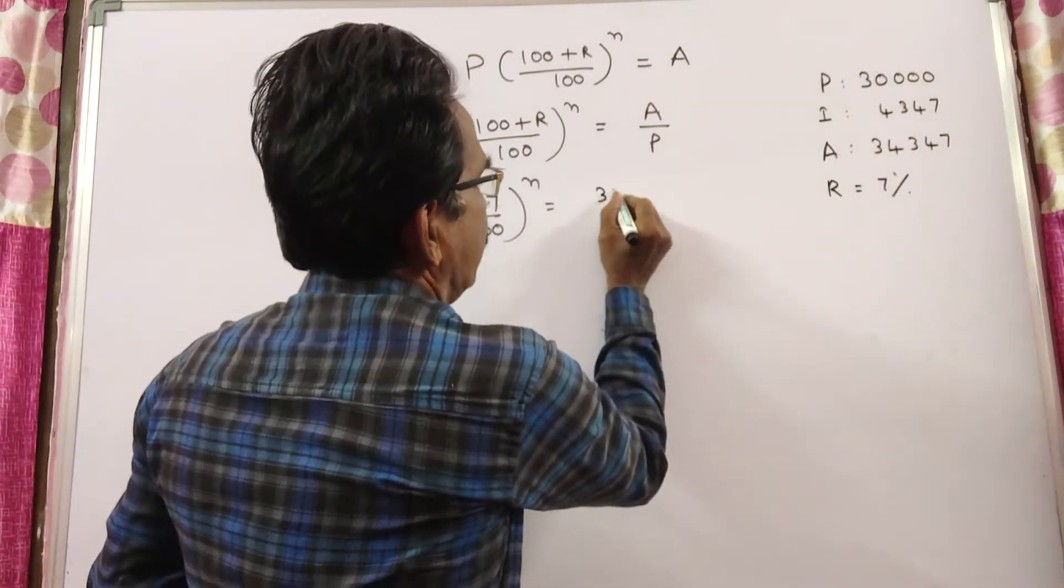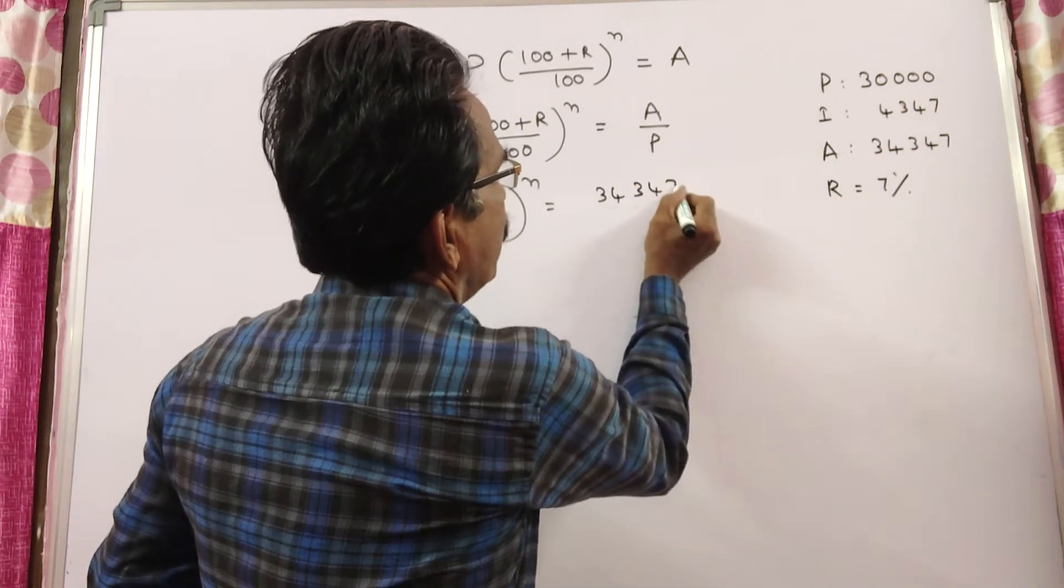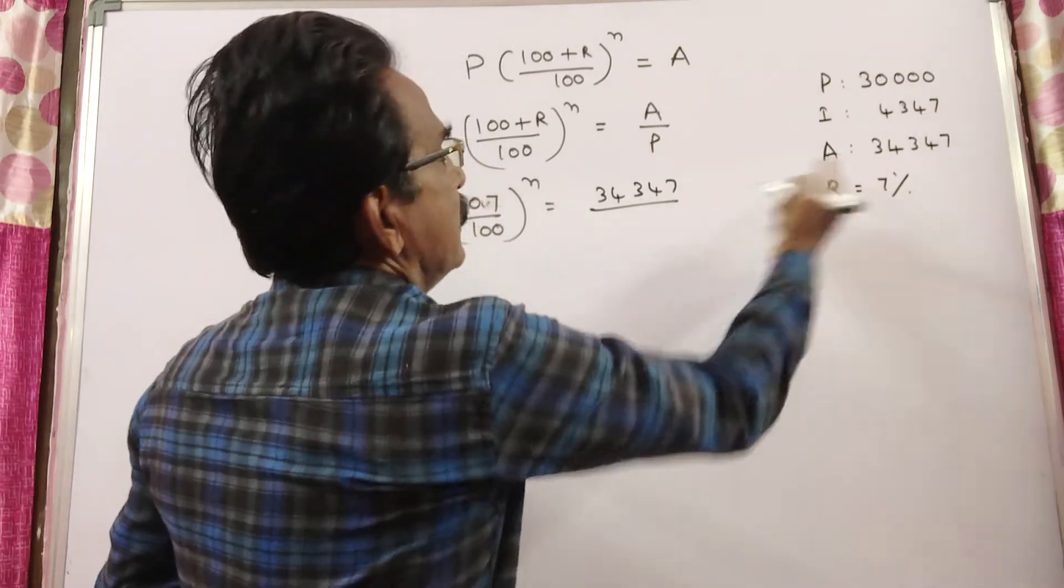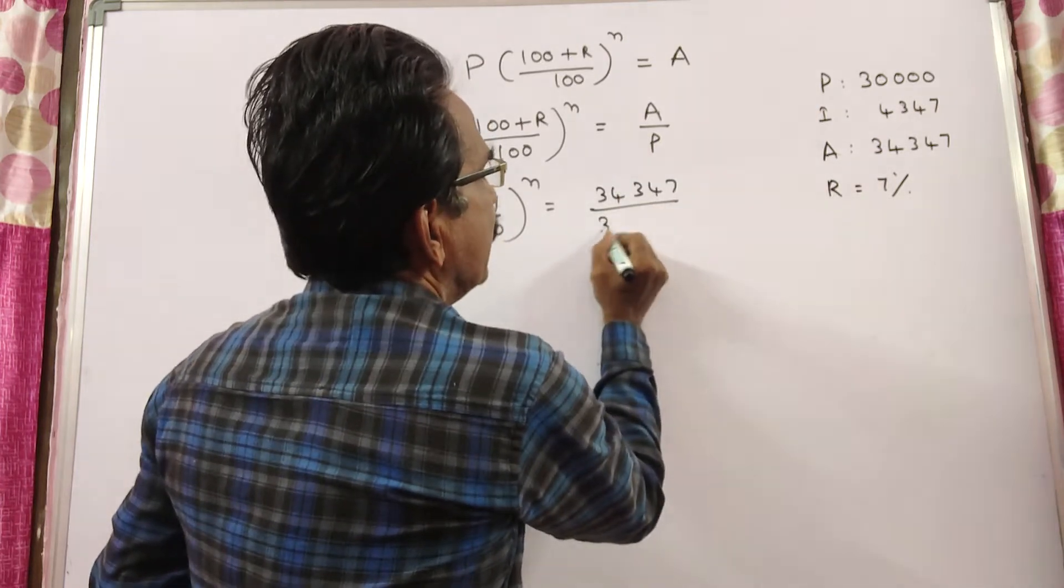34,347. So 34,347 by P, and P is 30,000.